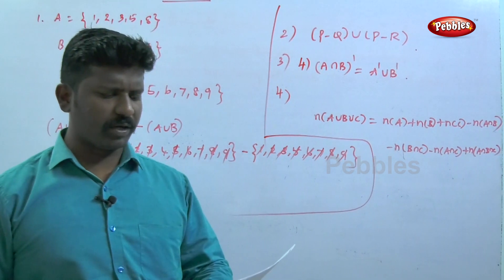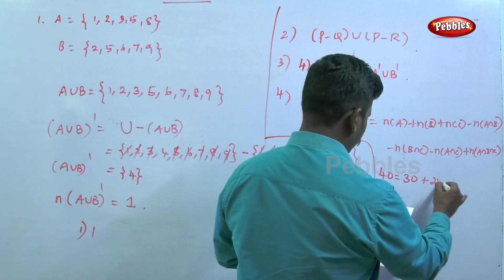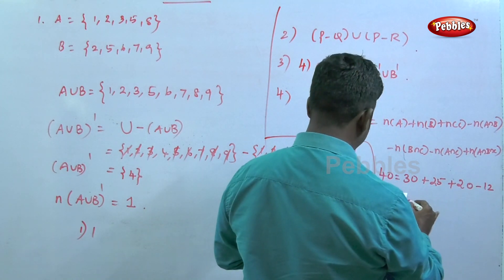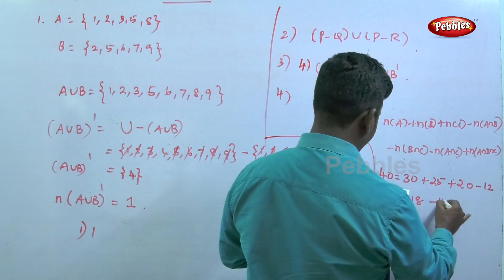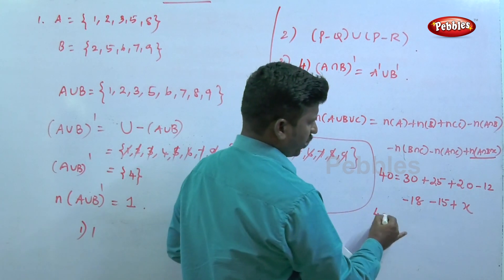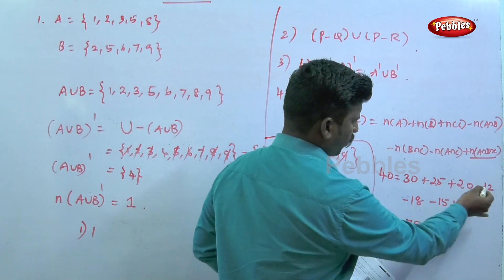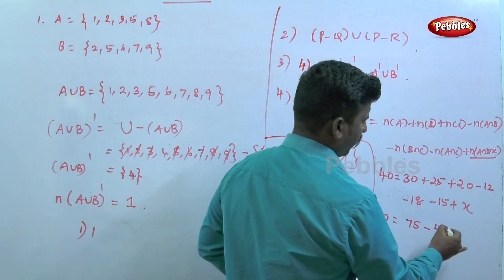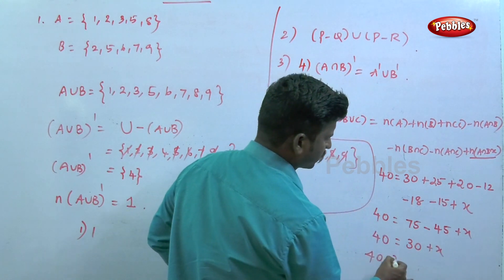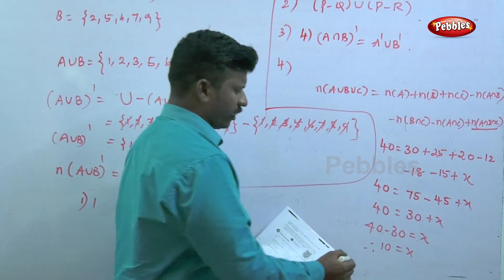Substituting the given values: 40 = 30 + 25 + 20 - 12 - 18 - 15 + X. That gives 40 = 75 - 45 + X = 30 + X. Therefore X = 40 - 30 = 10. Option 2 is correct; the answer is 10.